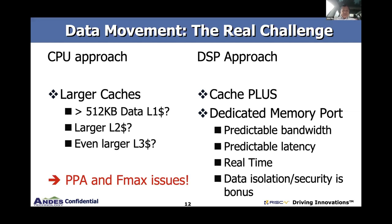Most vector processors on the market today are starting to support 512-kilobyte data L1 caches. I have not designed a processor with greater than 64-kilobyte data cache because of timing. We could put larger L2 and L3 caches, but fundamentally that introduces PPA and max frequency issues. Or we could go the DSP approach, where there are caches, local memories, and a dedicated memory port that gives predictable bandwidth and predictable latency, because DSP is fundamentally a real-time processor. Bonus is data isolation and security.